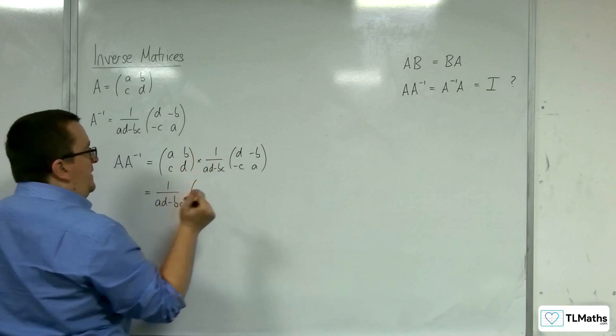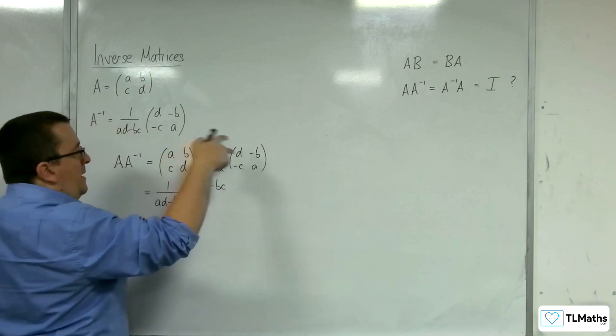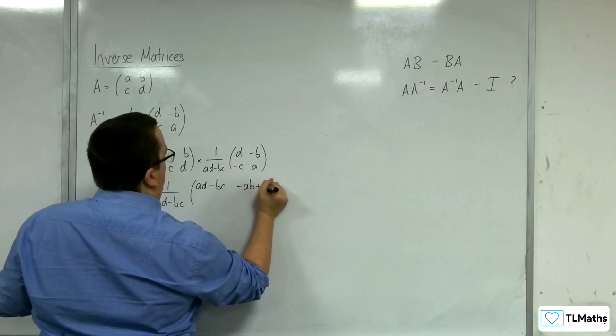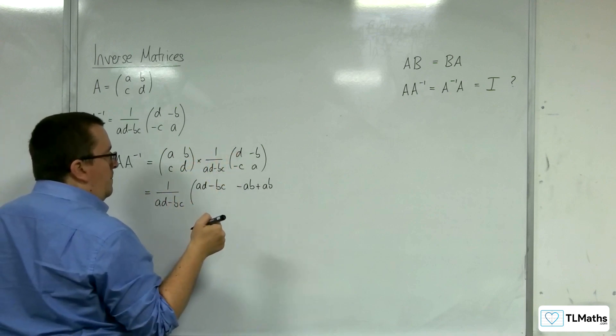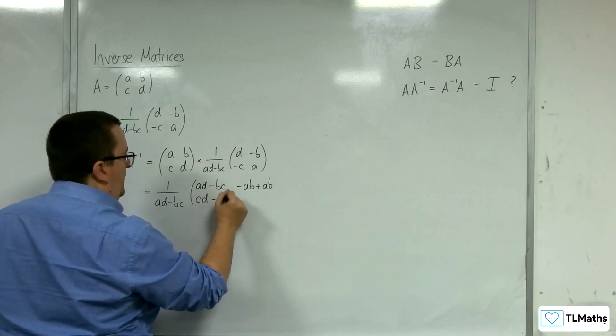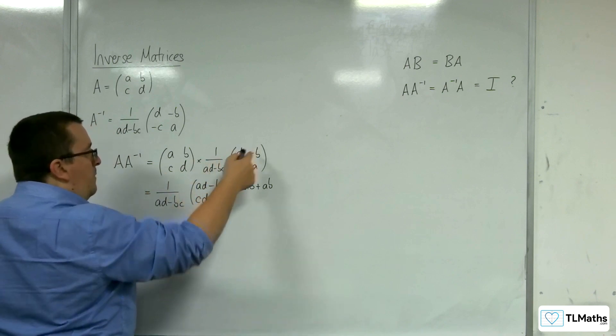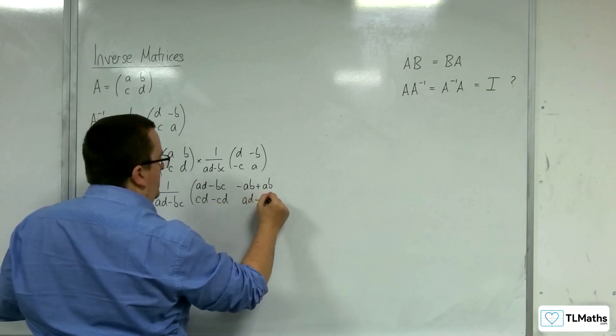Then I've got A, B times by D, -B, -C, A. So AD - BC, -AB + AB, CD - CD, and -BC + AD, which is AD - BC.